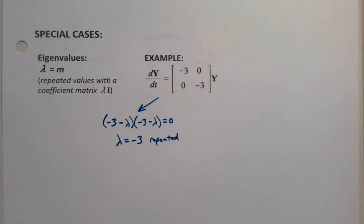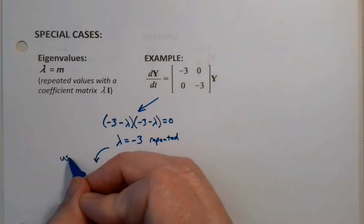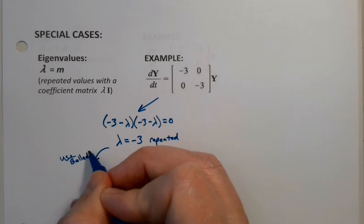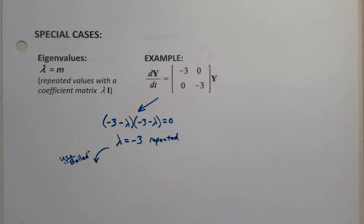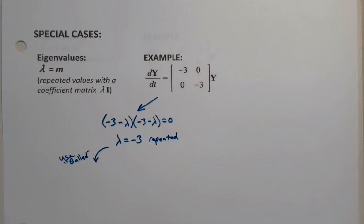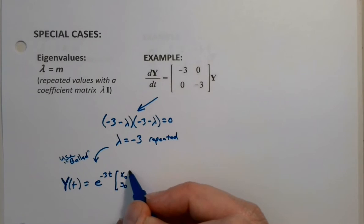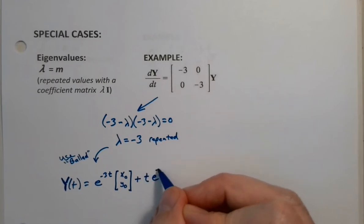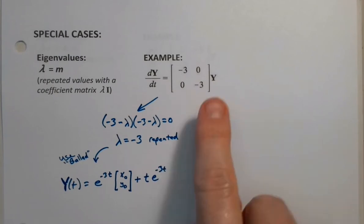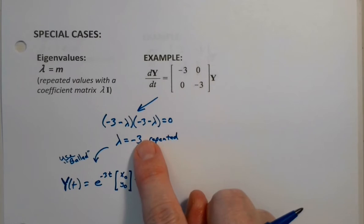We'd use the ballad. And we'd wind up with a particular solution. In this case, y of t would be e to the negative 3t times whatever my initial condition vector is, x of zero, y of zero,